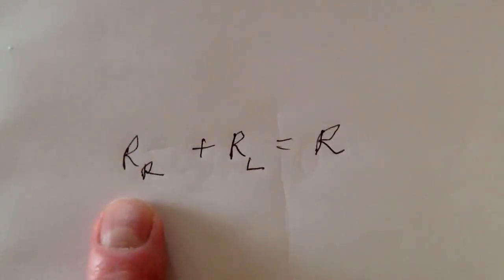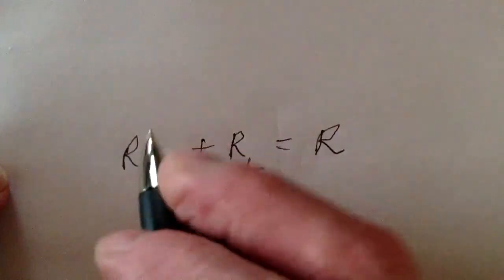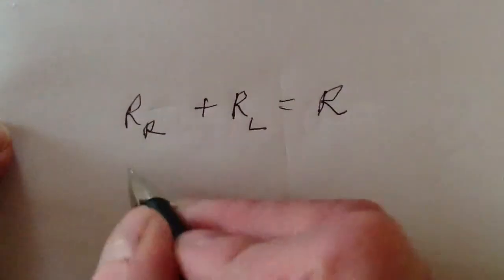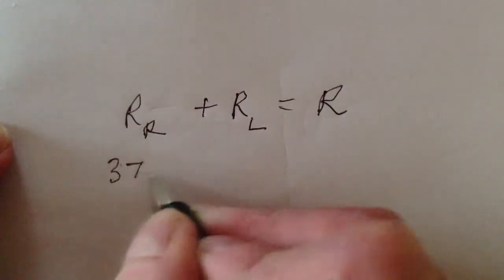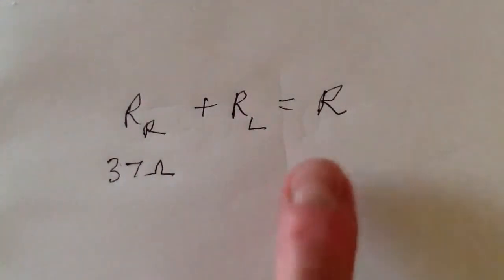The radiation resistance, in theory, of a quarter-wavelength antenna is, and that is an absolute theoretical value, 37 ohms. What was the total resistance? Well, it had to be a purely resistive impedance of 50 ohms.